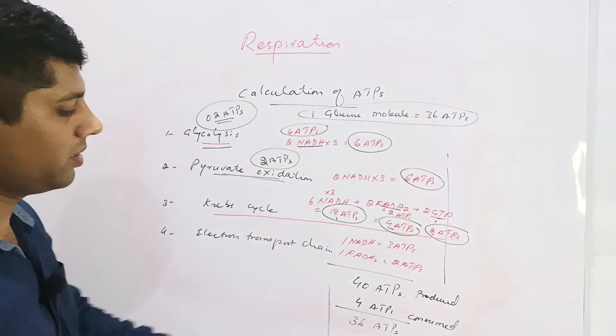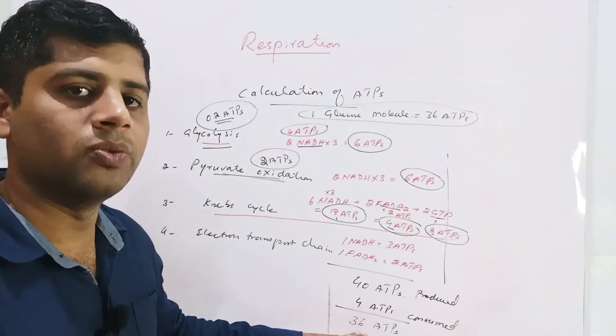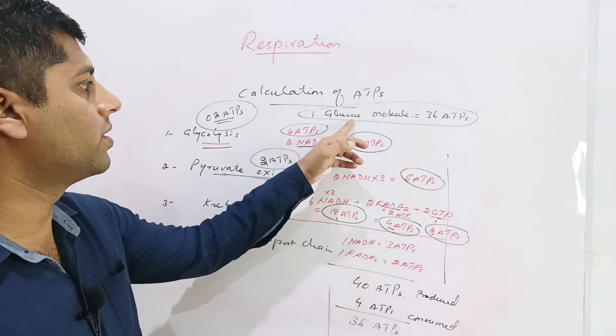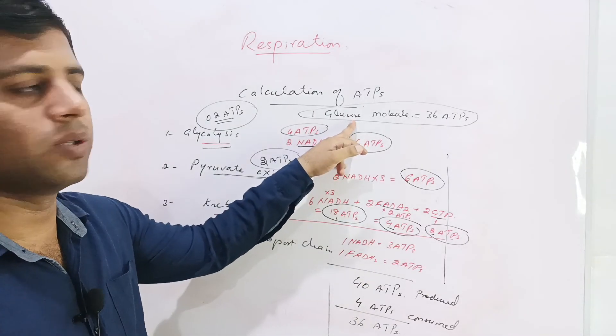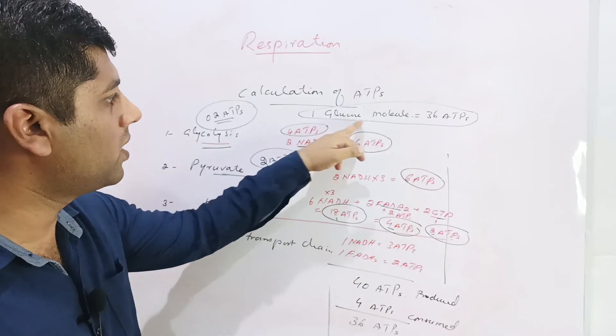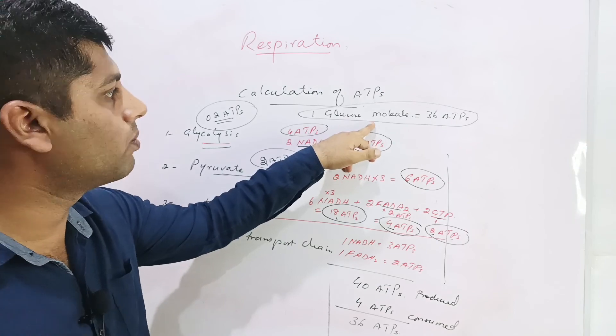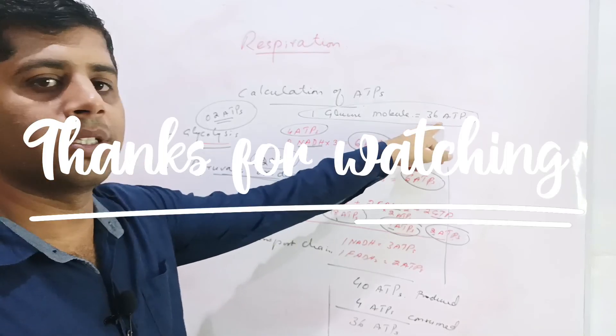So these are the 36 ATPs produced by the complete oxidation of one glucose molecule. One glucose molecule after aerobic respiration produces 36 ATPs.